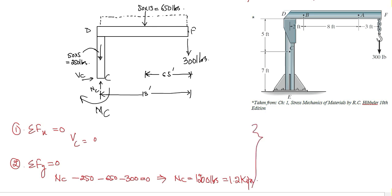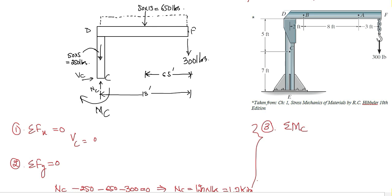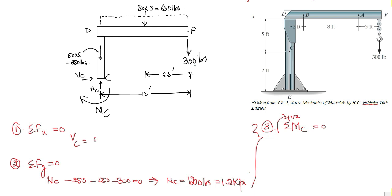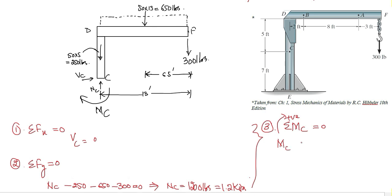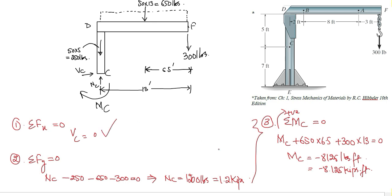To find MC, we apply the third condition of equilibrium — summation of all moments at point C equal to zero, considering clockwise moments as positive. MC is considered clockwise, hence positive. The moment due to 250 pounds is zero. The moment due to 650 pounds is clockwise with a moment arm of 6.5 feet. The 300 pounds also has a clockwise moment about point C with a moment arm of 13 feet. From this, MC equals −8,125 pound-feet. These are the resultant internal loadings acting at point C.